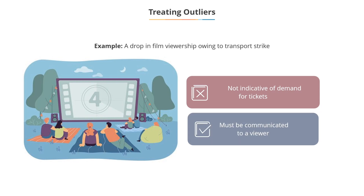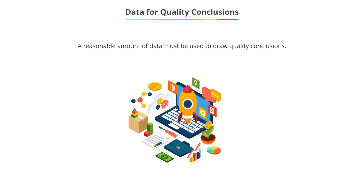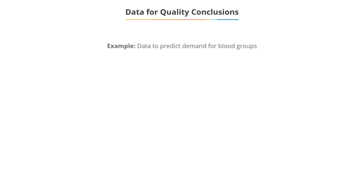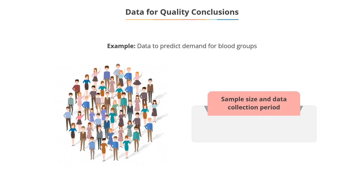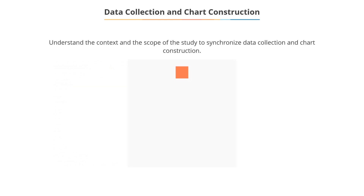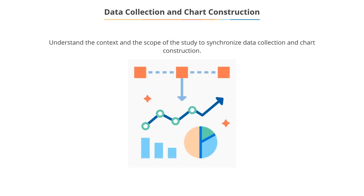Such information could also be communicated to a viewer. A reasonable amount of data should be used for quality conclusions. For example, bar diagrams that depict patterns in the demand for various blood groups should be based on data over a reasonably long period. Also, the sample size used and the period of data collection could be included for the viewer to have an idea on the reliability of the information portrayed. Thus, plans for data collection and chart construction should be synchronized after a thorough understanding of the context and the scope of the study.